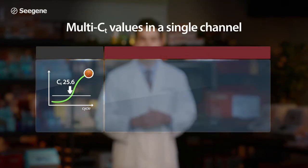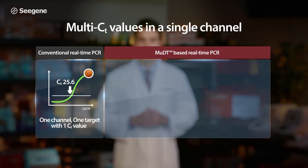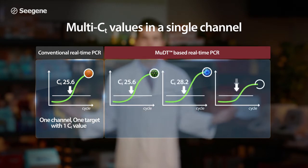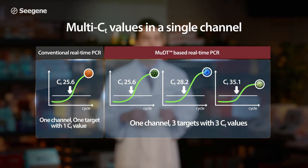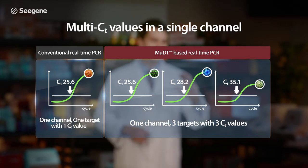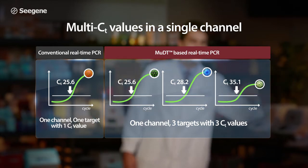MUDT breaks through the one-channel, one-CT-value limitation. Now with MUDT, multiple targets having different CT values can be detected in a single fluorescence channel. This is MUDT technology's key advantage.